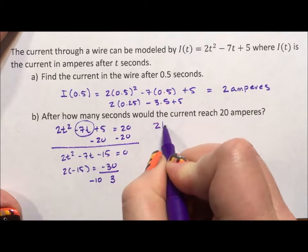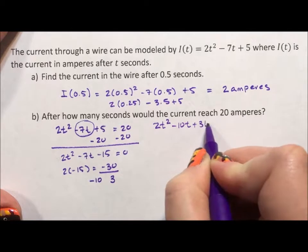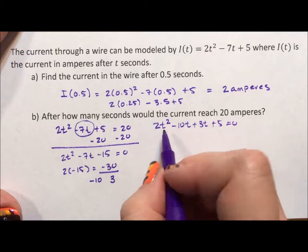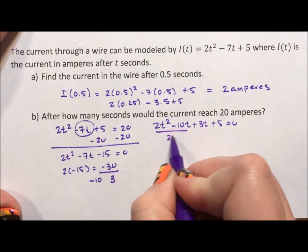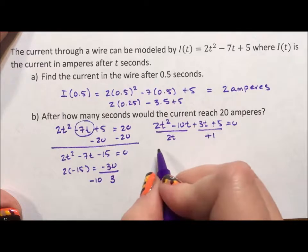So now we have 2t squared minus 10t plus 3t plus 5. Now that we have four terms, we can factor by grouping. I will pull a 2t out of the first two terms and a plus 1 out of the last two terms.